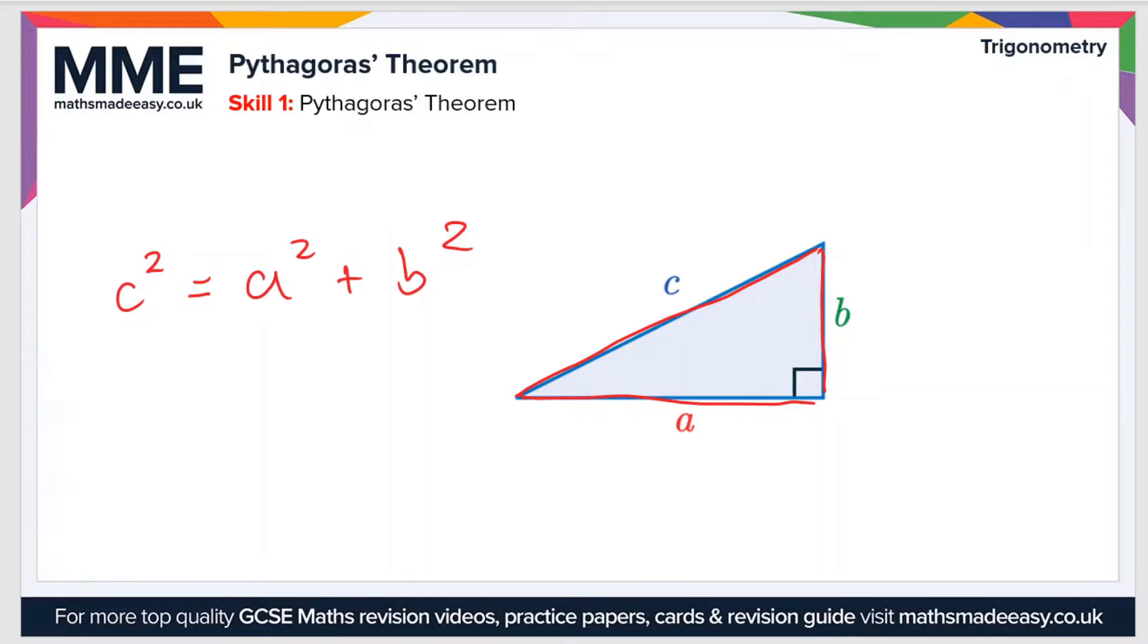This is the formula that you'll see all the time. Sometimes it's written as a squared plus b squared equals c squared, but they mean the same thing. There's one other way we can write it though, and that is c equals the square root of a squared plus b squared. That's useful if you already have the values of a and b and you just need to work out the length of the hypotenuse c.